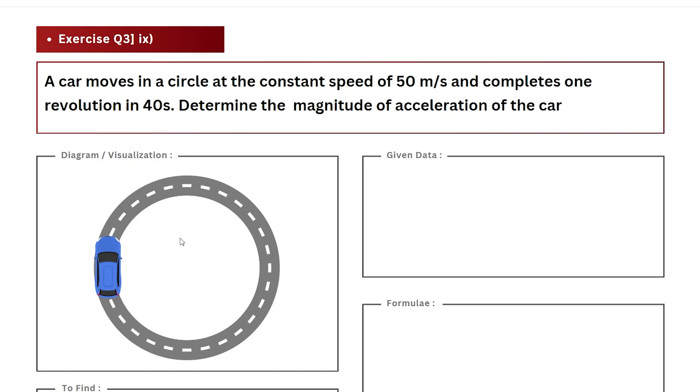Hi, in this video we're going to solve the ninth question from the chapter on motion in a plane. The question states that we have a car moving with a constant velocity, and this velocity value is given to us. Let's represent this velocity as v for now.